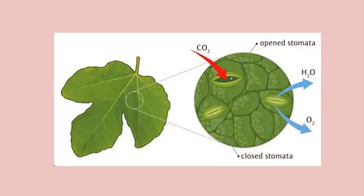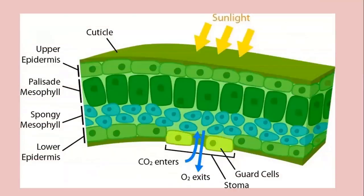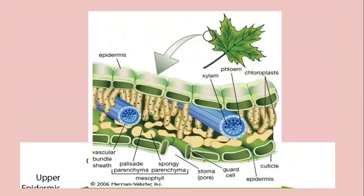As carbon dioxide enters the palisade mesophyll through the stomata, it spreads to each and every cell because of the large intercellular spaces among the leaf cells. Since the palisade mesophyll contains countless chloroplasts, it keeps absorbing more and more sunlight due to the chlorophyll pigment inside it.